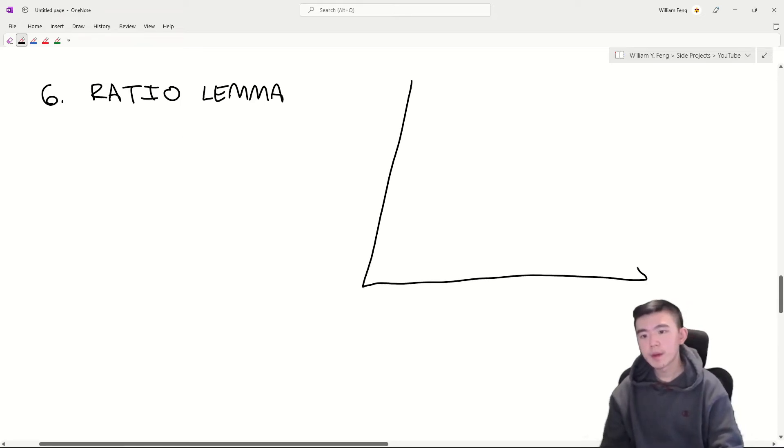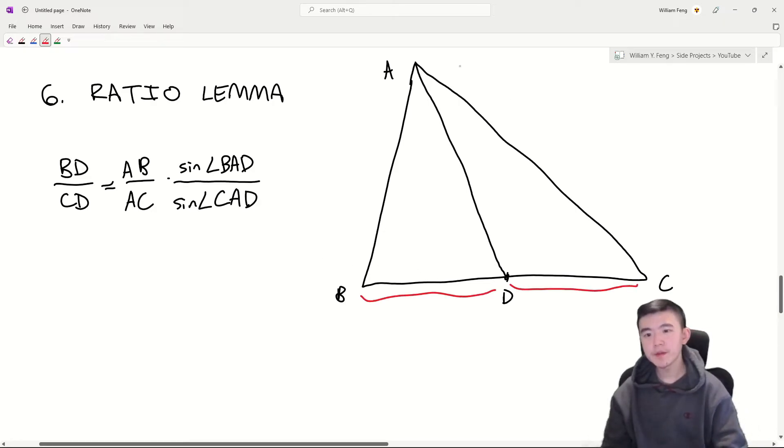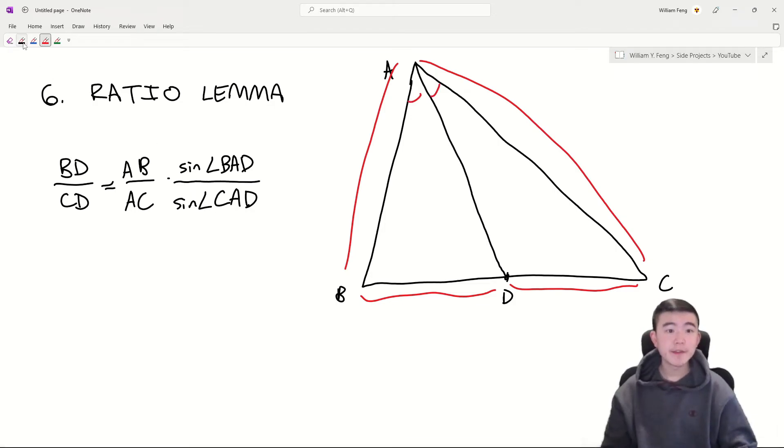Now let's get into some geometry. The ratio lemma tells us that in a triangle ABC, if there's a point D on segment BC, and we draw the segment AD, then BD over CD is equal to AB over AC times sine of angle BAD over sine of angle CAD. These are the segments involved, and these are the angles involved. Now a special case of this is the angle bisector theorem, where sine of BAD is equal to sine of CAD, because AD is an angle bisector. And that just tells us that the ratio of BD to DC is equal to the ratio of AB to AC.